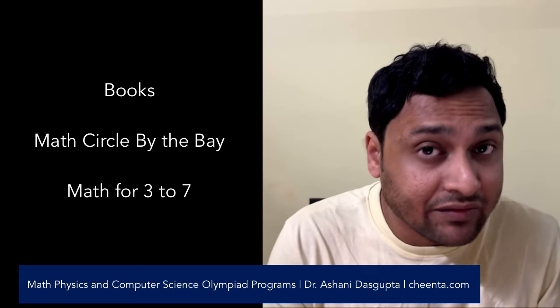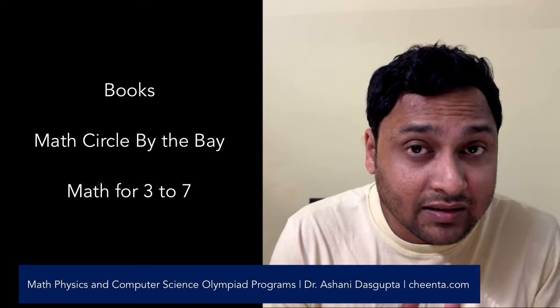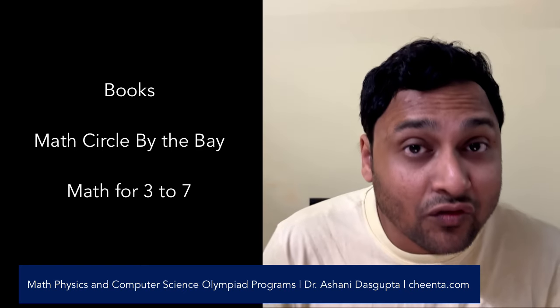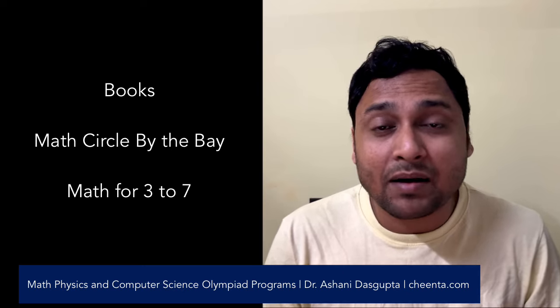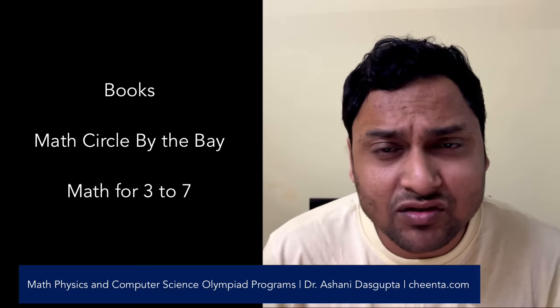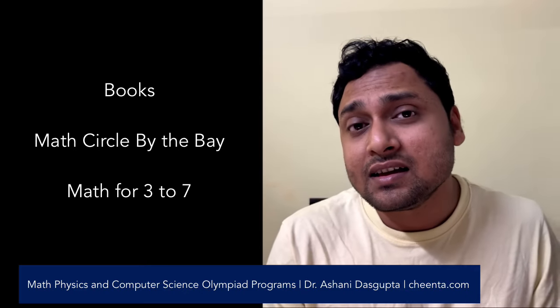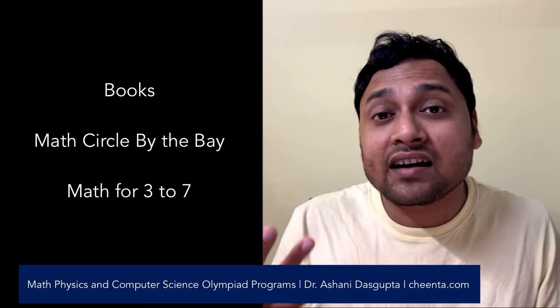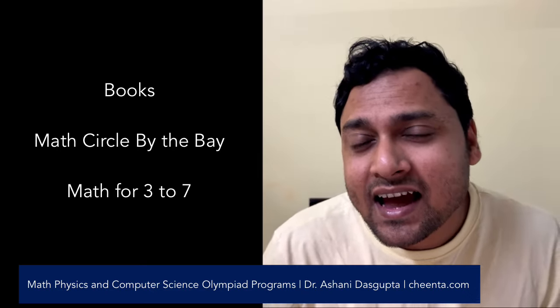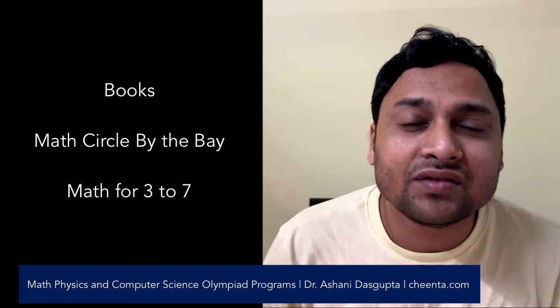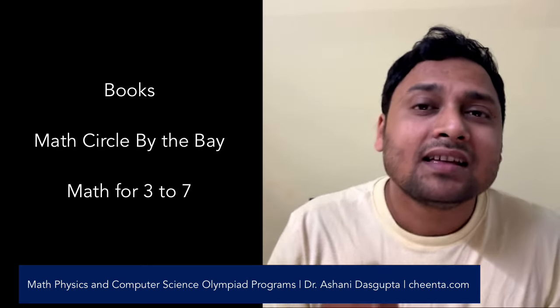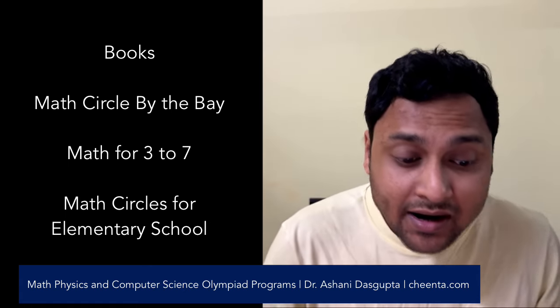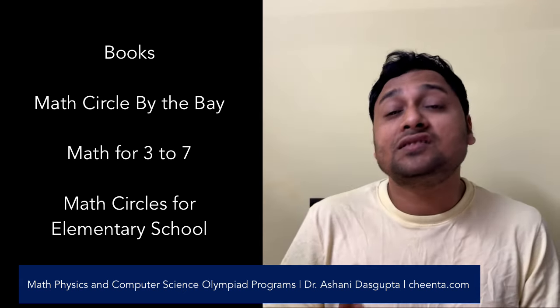There is another book of a similar flavor. It's called Math from 3 to 7, Math from 3 to 7. This is again a math circle for preschoolers. This is written by someone called Zvonkin, so you can Google that. I also put a link of that in the description section. You can also check that out. All of the names are there. This particular book is like a diary of math circles where the coordinator or the faculty works with three or four kids and they together do problems and activities which make you think. That's the second one. The third one is called Math Circles for Elementary School Students. This is by Natasha Raskhovskaya, again a book of similar flavor.